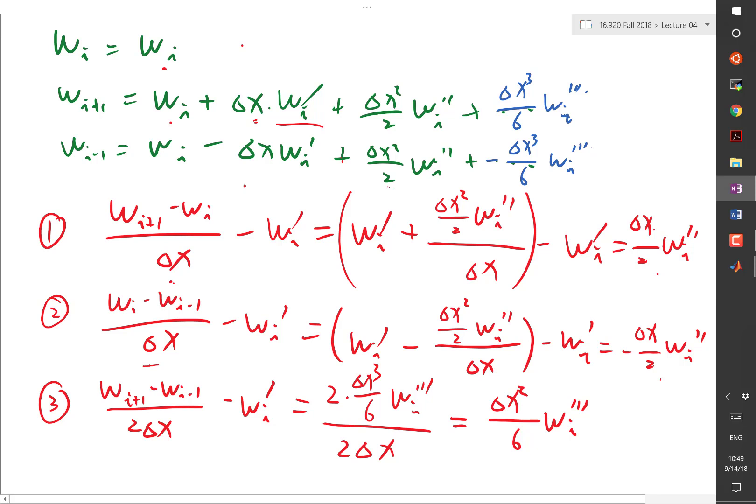These cannot all be maximized - a scheme cannot be very simple, very accurate, and very stable. If you put a constraint on simplicity, which means I can only access Wi minus 1, Wi plus 1, and Wi, you can show that it's impossible to have a linear scheme that beats what we already have.